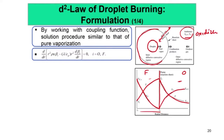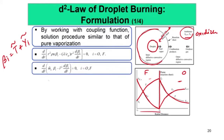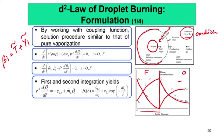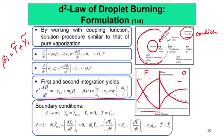We use the coupling function formulation, and the solution procedure is similar to that of prior vaporization. The coupling function is βi = T̃ + Ỹi, where T̃ is the non-dimensionalized cp·T and Ỹi is the stoichiometrically-scaled mass fraction. We apply Lewis number = 1. Writing in spherical coordinates and integrating, we get a normalized form using r/rs.